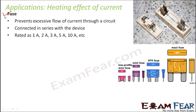For example, think of your refrigerator — if too much current flows through it, it will get spoiled. So we use a fuse connected in series with the refrigerator's circuit. Different fuses have different ratings: 1 ampere, 2 ampere, 3 ampere, 5 ampere — that depends on where they are being used. Here you can see a picture of a fuse. A fuse works on the principle of the heating effect of current.